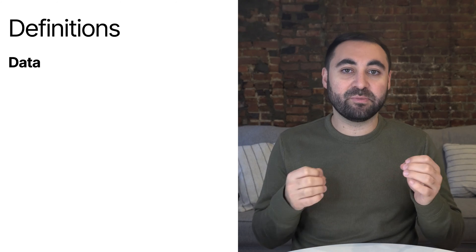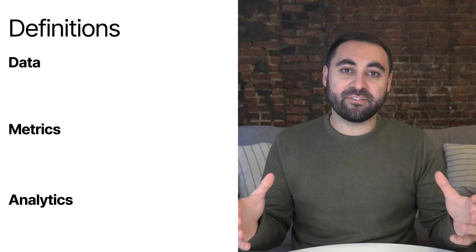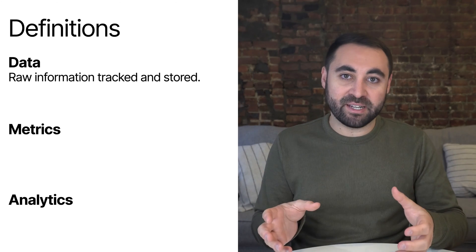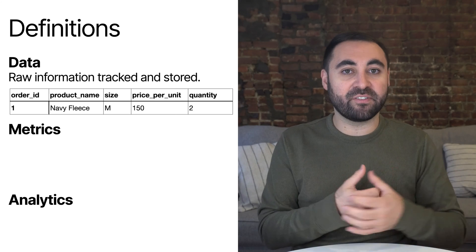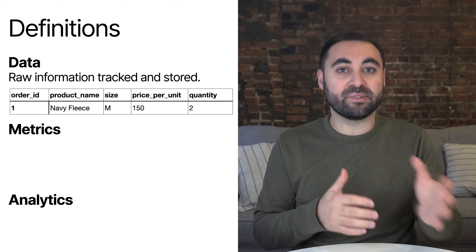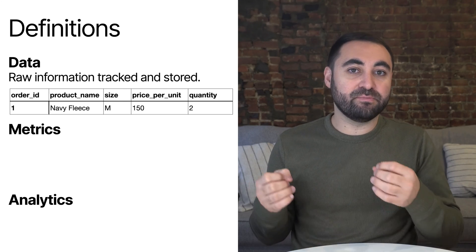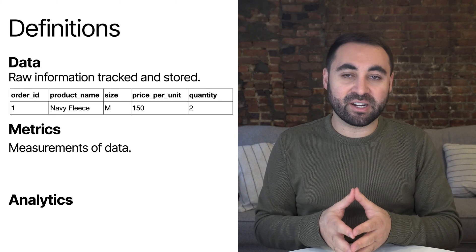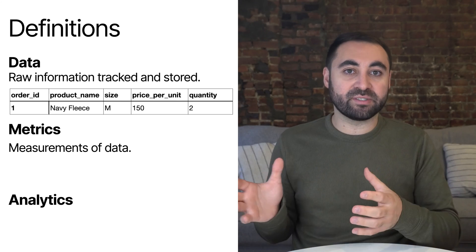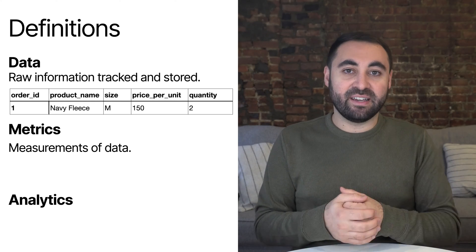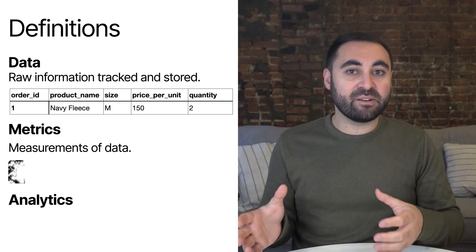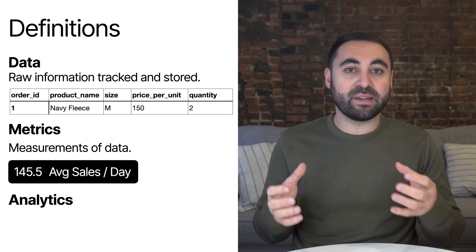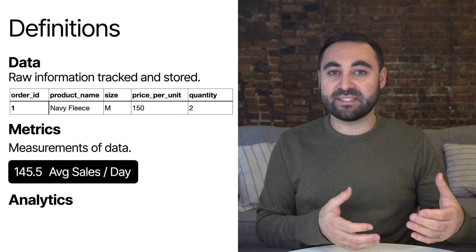One of the most valuable tools in your toolkit as a product manager is data. Within the world of data, you may hear three different words: data, metrics, and analytics. Data refers to the raw information tracked from your product. For example, raw order information for an e-commerce store — order number one, a navy fleece, size medium, price per unit $150, quantity two, total revenue $300, and so on. Metrics refers to measurements of the raw data. For example, average sales per day, which takes the total number of orders in a period and divides it by the number of days. With 1,455 orders in 10 days, the average sales per day would be 145.5 orders. A product manager may track several other metrics like average order value and average quantity per order.